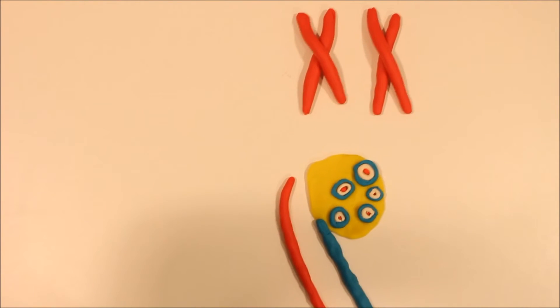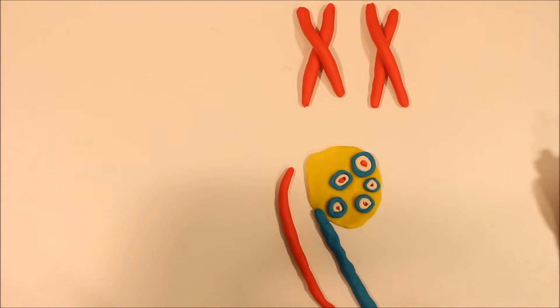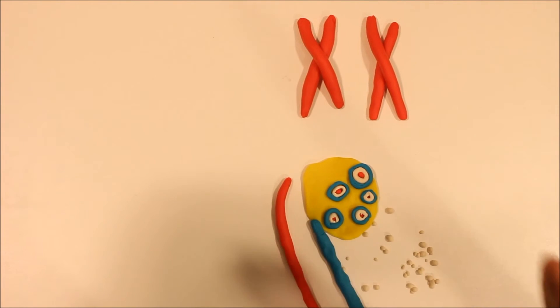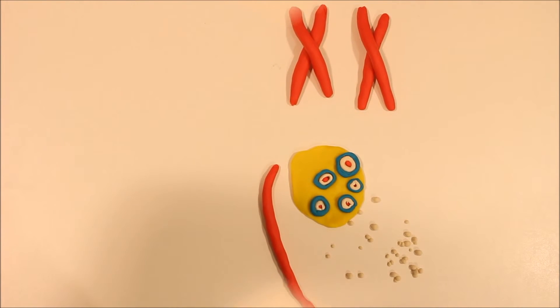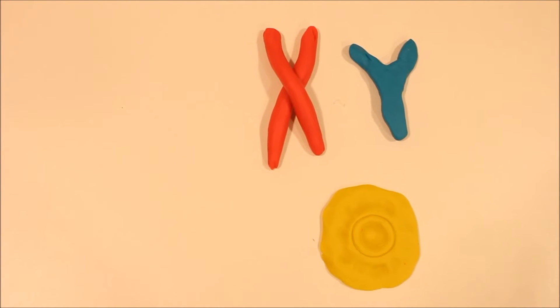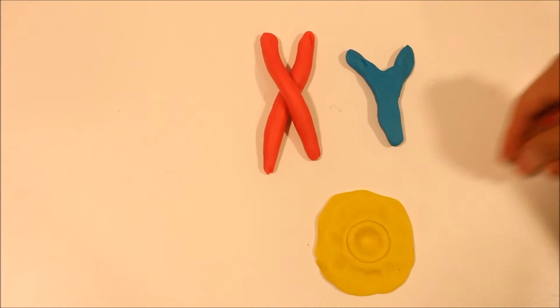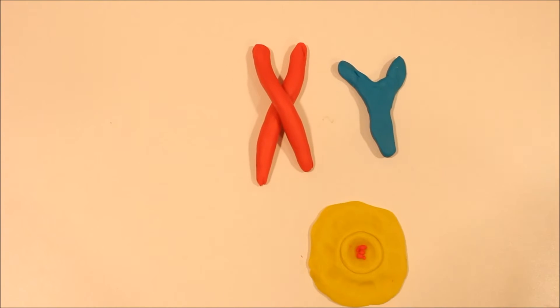The theca cells then start secreting estrogen, which allows the Müllerian duct to further differentiate into the womb and simultaneously degrading the Wolffian duct. In males, there's a defined time in which the sex determining region of the Y chromosome, or SRY for short, is transcribed and translated, initiating the male pathway.